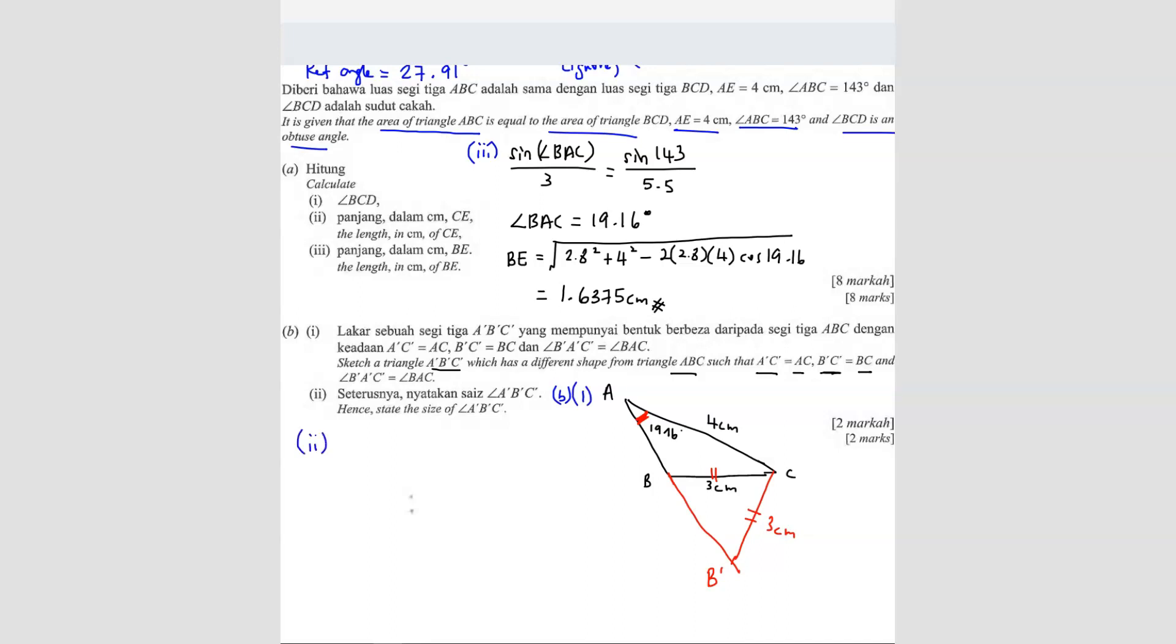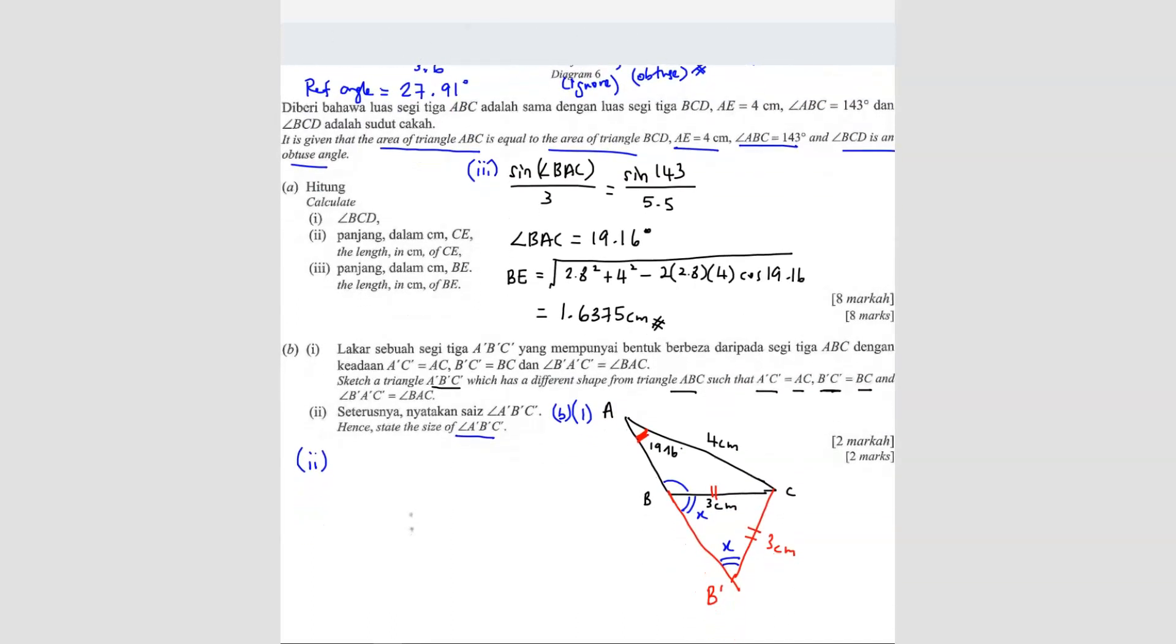The second one here. They ask you to state the size of angle A prime B prime C prime. They want this angle. Now since these two lengths are the same, we can say they are isosceles. So here is also the same. If here is X, here also is X. They are basically the same. So how are we going to find X? Well, we know this angle. This angle was given in the question. ABC is 143, here is 143. And we know that we extended this line, so it's a straight line. So that means angle A prime B prime C prime is equals to 180 minus 143. So your answer is 37 degrees.